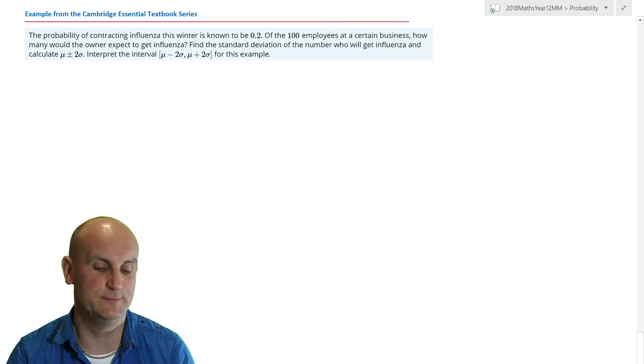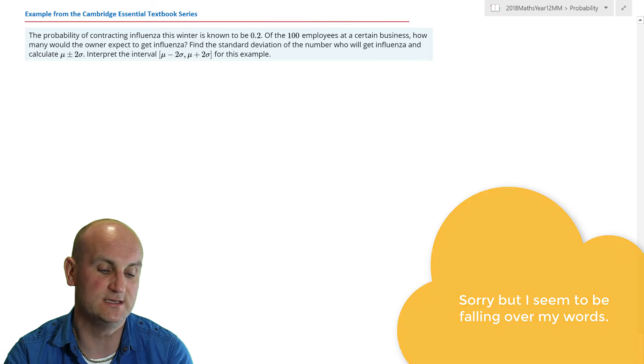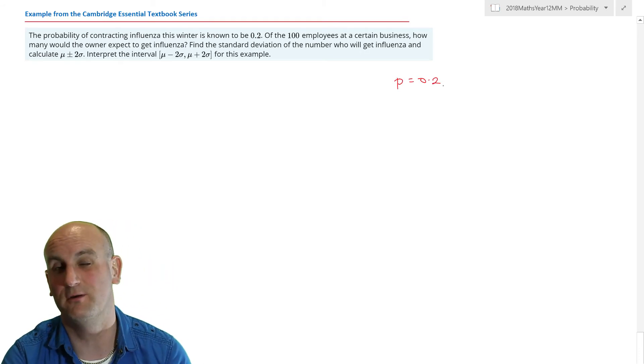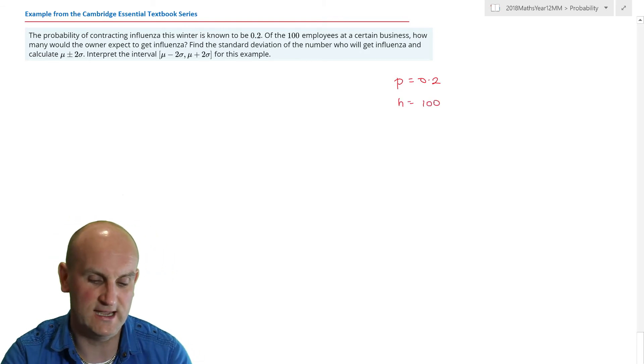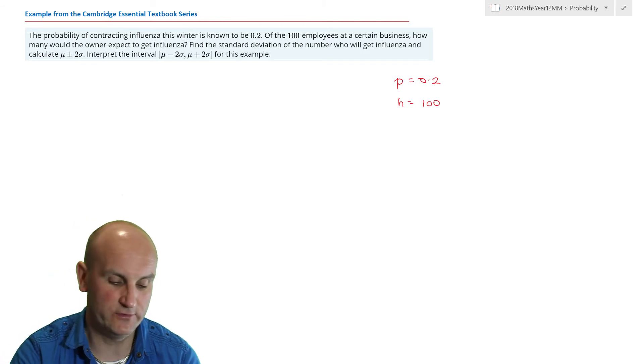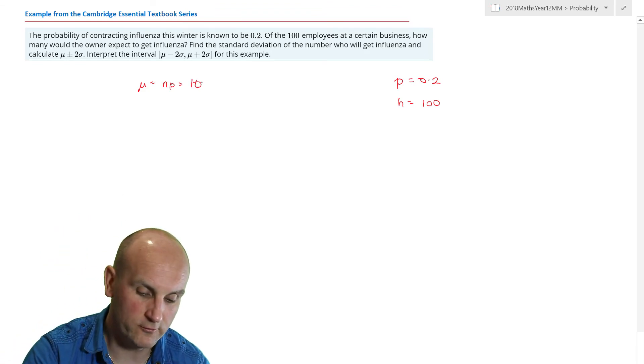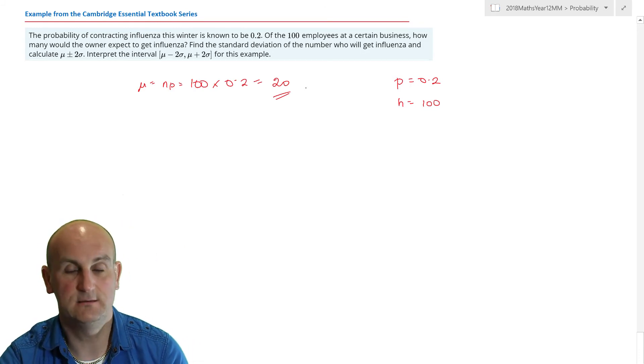Let's look at this example from the Cambridge textbook. The probability of contracting influenza this winter is known to be 0.2. So P equals 0.2. Of the 100 employees, so N is 100, how many would the owner expect to get influenza? The minute I see expectation, mu is equal to N times P because they're either going to get flu or they're not so it's binomial. It's 100 times 0.2 which equals 20. He would expect 20 people to get influenza. That's not to say that 20 people will get it but that seems to be what the probability suggests.